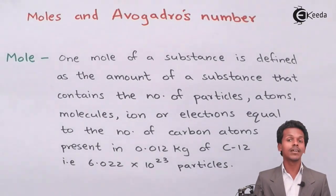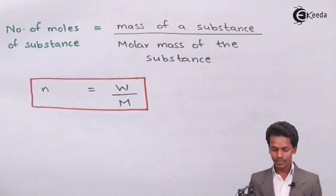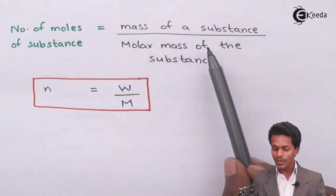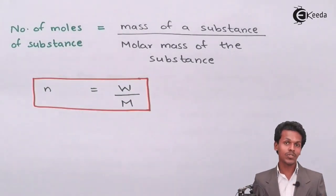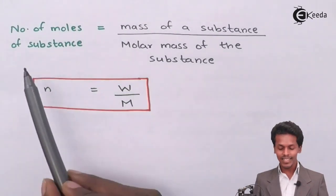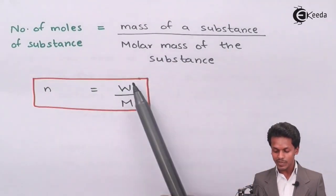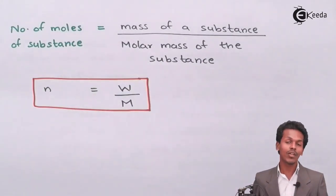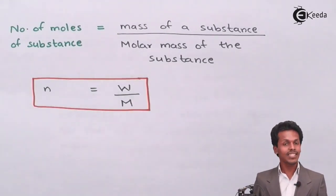We also have a formula to calculate the number of moles of a substance. The number of moles of a substance equals the mass of the substance divided by the molecular mass of the substance. The number of moles is denoted by small letter n, the mass of the substance is denoted by capital W, and the molar mass of the substance is denoted by capital M.